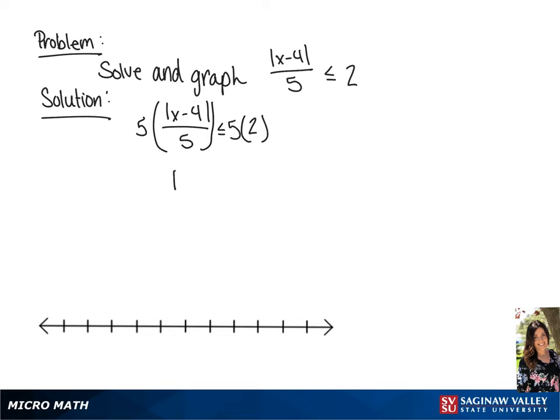This will give us the absolute value of x minus 4 is less than or equal to 10. Now we will have two inequalities: x minus 4 is less than or equal to 10, and x minus 4 is greater than or equal to negative 10.